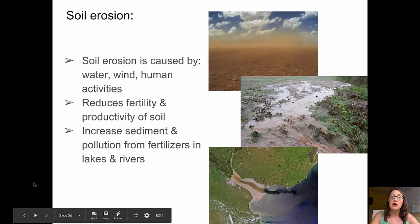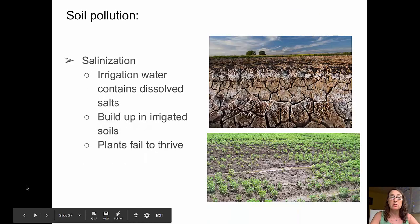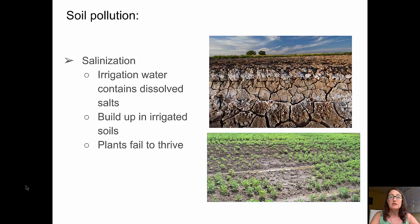Soils across the globe are in trouble in many places. Soil erosion is a significant factor, whether it's by water, wind, or human activities. All of these things that cause soil to erode reduce the fertility of soil and reduce productivity. They can also increase sediment and pollution, especially from fertilizers in local lakes and rivers. A particular type of soil pollution that's damaging is salinization. This occurs when irrigation water containing dissolved salts builds up in irrigated soils. When the water evaporates and the soils dry out, it leaves behind deposits of salts, and plants fail to thrive.